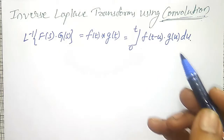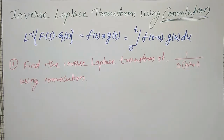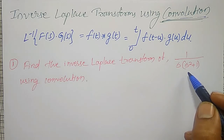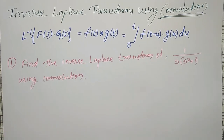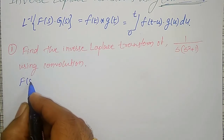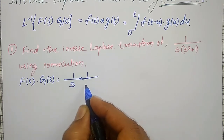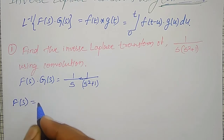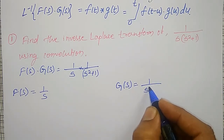Find the inverse Laplace transform of 1 divided by s(s² + 1) using convolution. We have done this type before using partial fractions, but here they specifically ask for convolution. So let me consider F(s) × G(s) = (1/s) × (1/(s² + 1)), where F(s) = 1/s and G(s) = 1/(s² + 1).